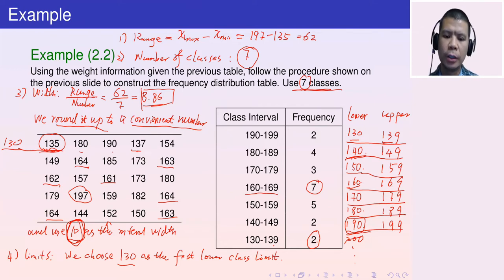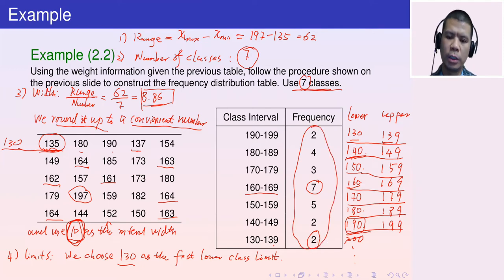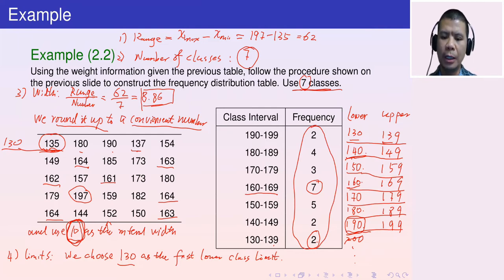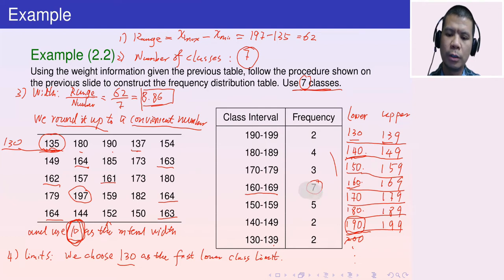We count the number of values in each interval to obtain all the frequencies, then put them together to get the complete frequency distribution table.